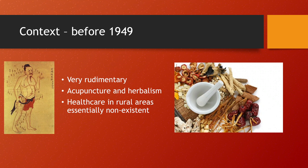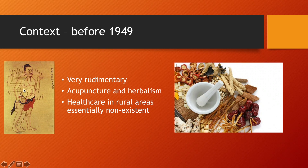Health care was very rudimentary. They used traditional methods like acupuncture and herbalism, where they used plants as medicine. Health care in the rural areas was virtually non-existent. There were some hospitals built in the 1920s and 1930s, but that was mainly confined to the cities, and there were very, very few.